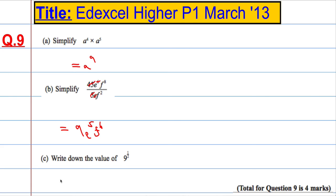And then finally, write down the value of 9 to the power of 1 half. Well, fractional powers to the power of 1 half means take the square root. It's the same as taking the square root, so 9 to the power of 1 half is the same as the square root of 9, which is 3.